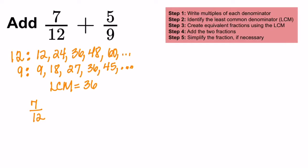For step 3, you want to create equivalent fractions. Both fractions need to have a denominator of 36. So you need to change your 7 twelfths to have a denominator of 36. So you would need to multiply both the 12 and the 7 by 3. Now we'll change the 5 ninths. So we're going to multiply both the 9 and the 5 by 4.